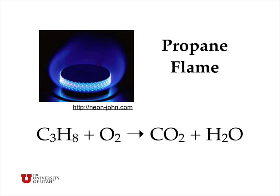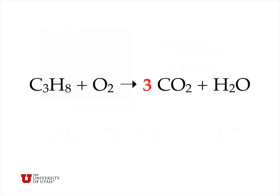According to the rule, we should look for elements that appear in only one compound on each side. Carbon appears in propane only on the reactant side and CO2 only on the product side. Hydrogen appears only in propane on the left-hand side and only in water on the right-hand side. Oxygen appears in three species, so we should save that for last. Let's do carbon first. There are three carbon atoms on the left-hand side and only one on the right-hand side. So we introduce a stoichiometric coefficient of 3 in front of the CO2, and that balances the carbon.